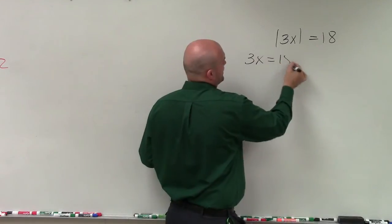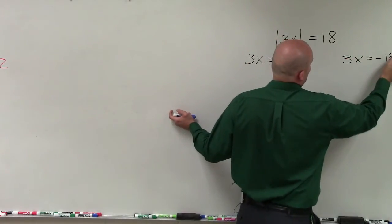So to do that, I say 3x is equal to 18 and 3x is equal to negative 18.